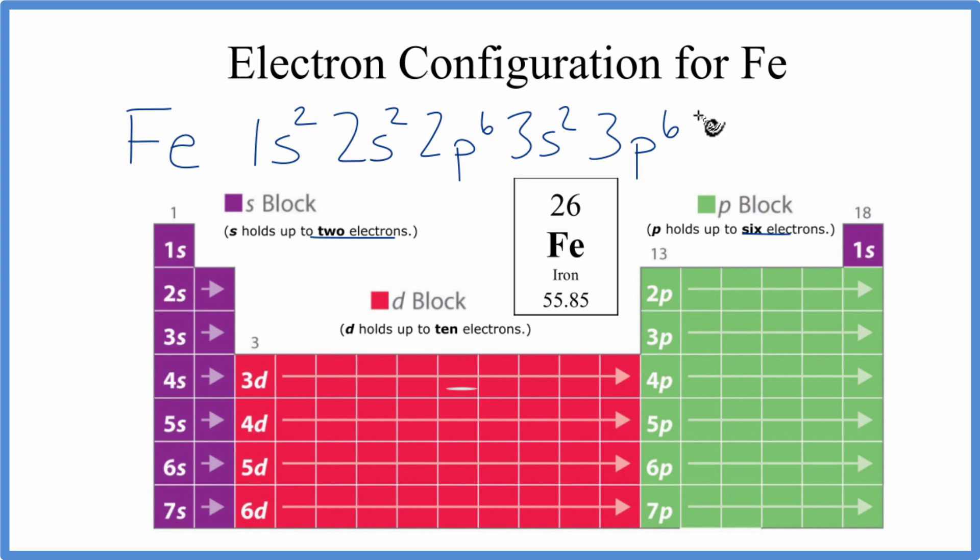3p, 4s. We'll put 2 in there. There's 20, so we only need 6 more. From the 4s, we go to the 3d. Put our 3d. And d's, they can hold up to 10, but we only need 6 to complete the electron configuration for iron here. So we'll just put 6 there. And we're done.